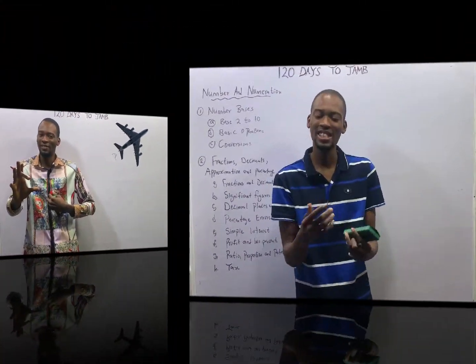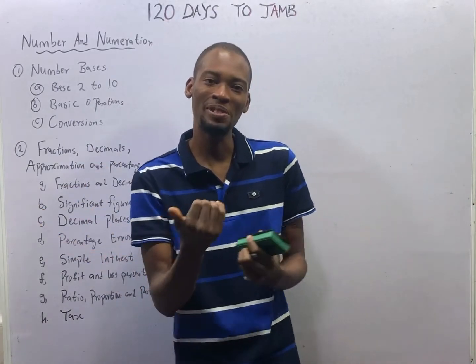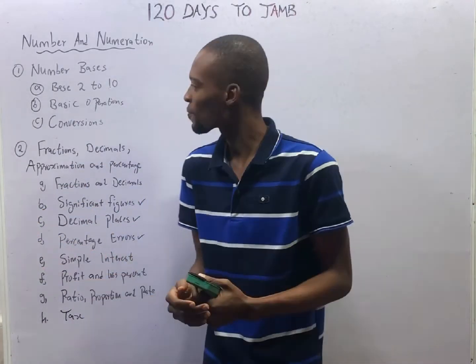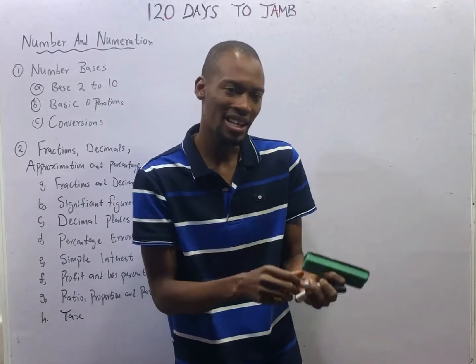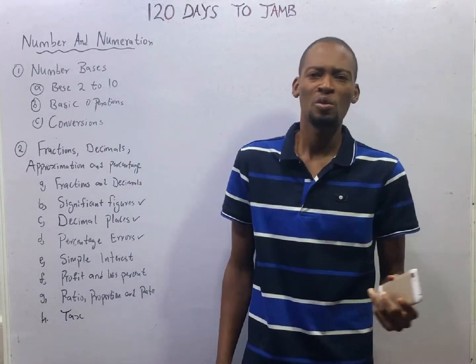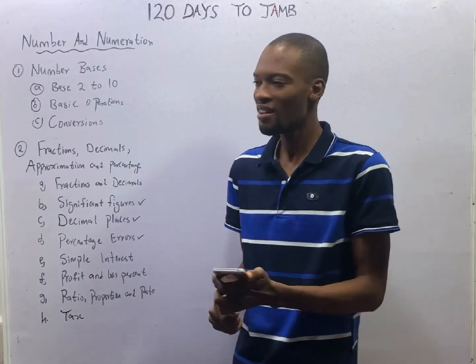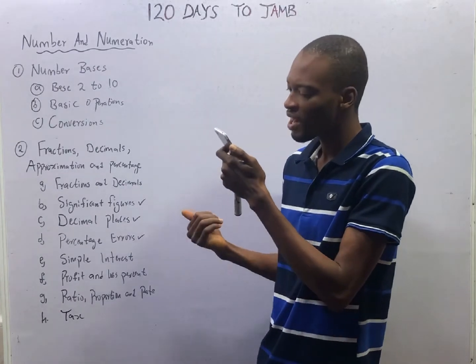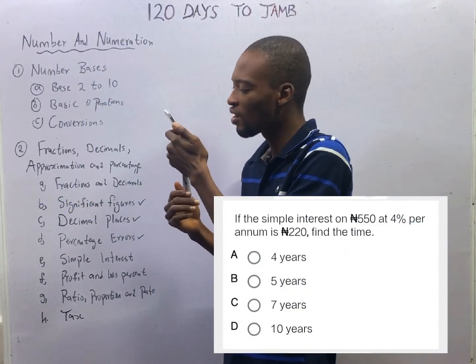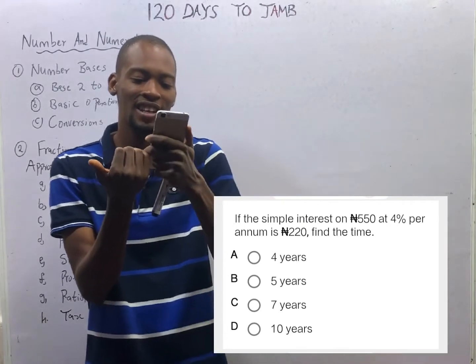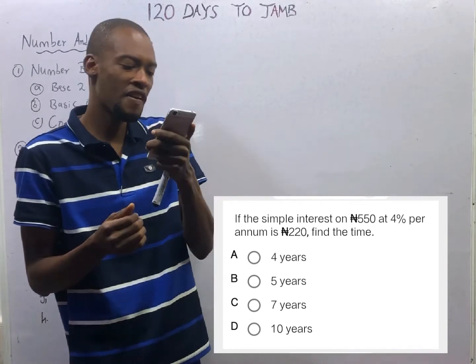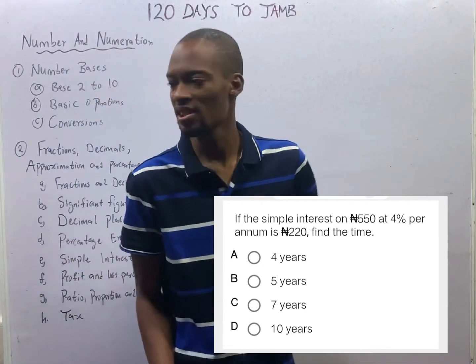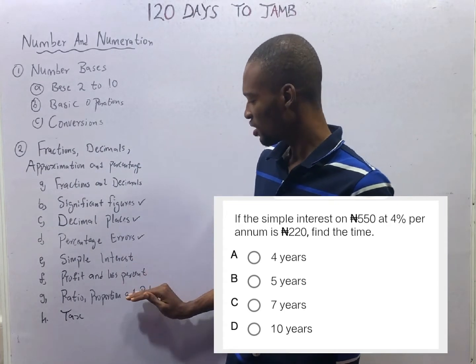Ladies and gentlemen, it is time to take off. This is episode 7 of the 120 Days to Jump Mathematics with Flash Isaac. We are still answering questions under number and numeration. In this episode, we shall be taking a look at two questions. The first question says: if the simple interest on 550 naira at 4% per annum is 220 naira, find the time.